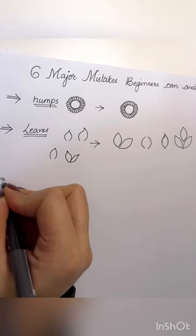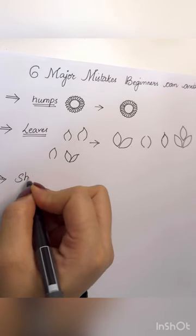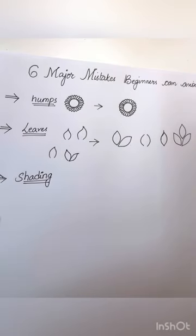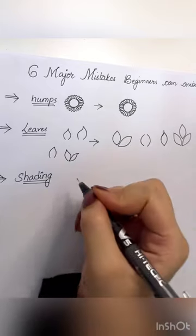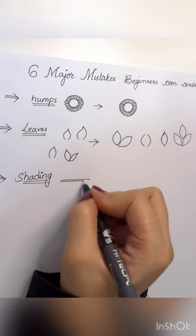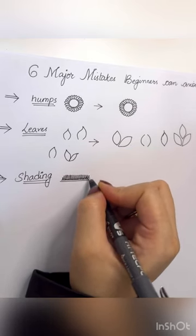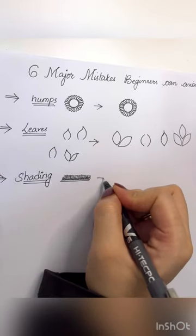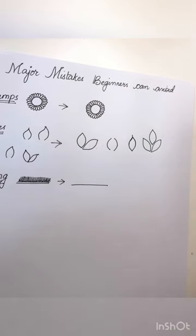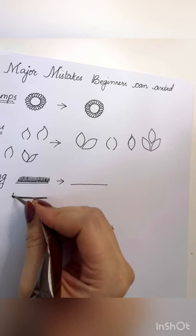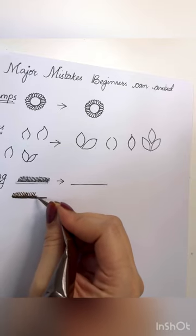The third mistake you can avoid is in shading. Most of the time when you do shading, a lot of girls create shading like this, too rough and too fast, and it is the exact type. This is not a correct way to apply your shading.